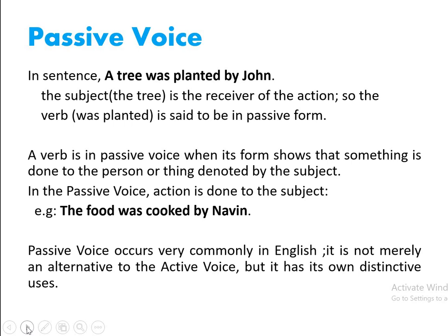A verb is in passive voice when its form shows that something is done to the person or thing denoted by the subject. So in a passive voice, the action is done to the subject. When we say 'The tree was planted by John', the subject is the tree and something is being done to the tree by John, so it becomes a passive voice. Similarly, 'The food was cooked by Naveen' — here the subject 'food' has an action taken on it, that is, it is being cooked by Naveen. So this is again an example of a passive voice.